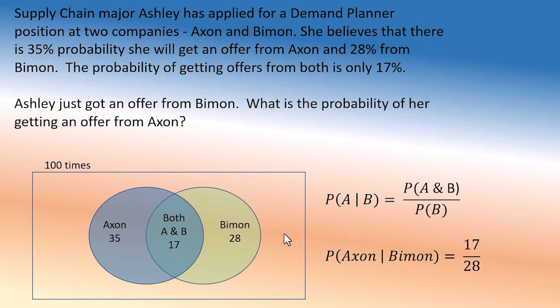Now suppose she gets an offer from Exxon and she's wondering what are the chances she also gets an offer from Biman. Exxon means she is in the Exxon circle, and to get an offer from Biman she has to be in the overlapping group. So that's 17 out of 35 — that will be Biman given Exxon, compared to Exxon given Biman which was 17 out of 28.